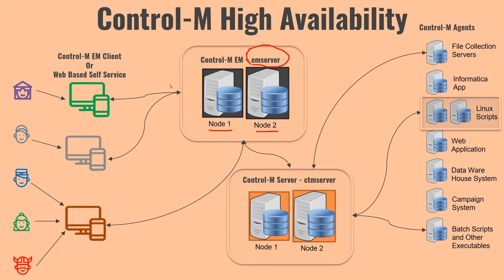If one node goes down — say Node 1 goes down while Control M EM client was interacting with Control M EM — the user won't even notice because Node 2 is still active and will process all requests. Similarly, Control M Server is also installed on two nodes with a logical hostname, for example 'CTM Server'. Whenever Control M EM interacts with Control M Server using that logical hostname, it points to whichever active node is available, ensuring no single point of failure.